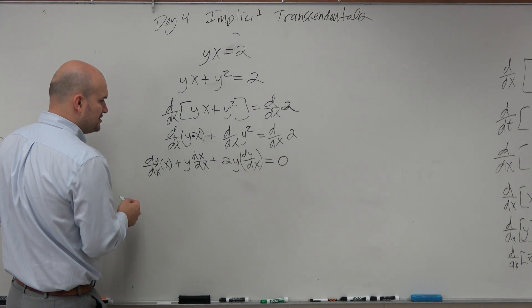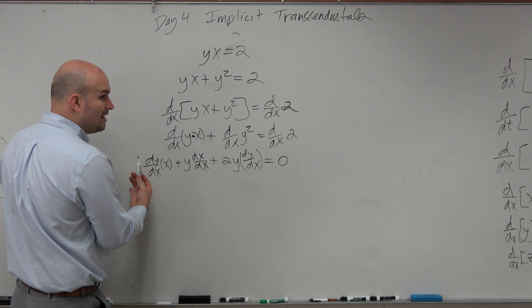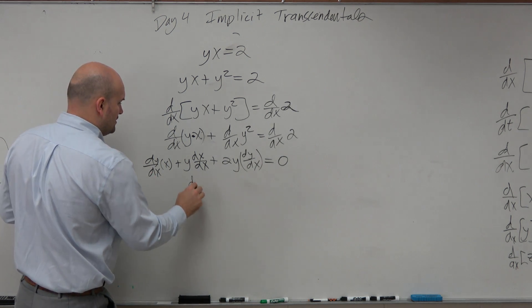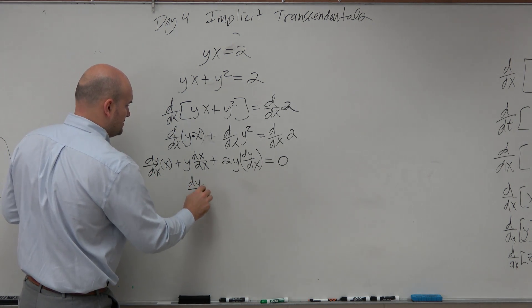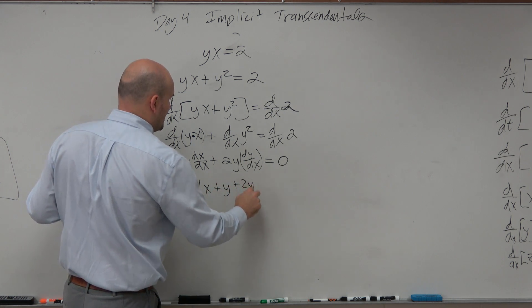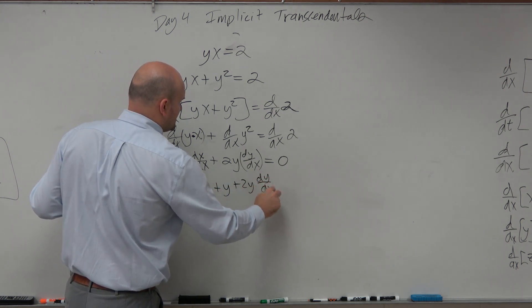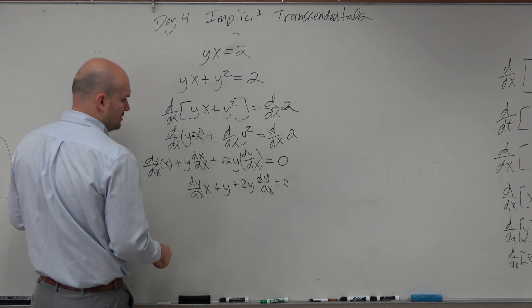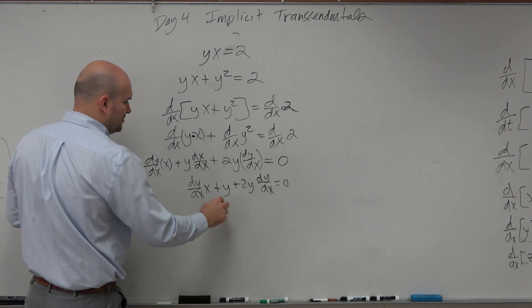All right, so what we want to do is get all the dy/dx's to the same side. So we have dy/dx times x plus y plus 2y dy/dx equals 0. All right, so I just simplified that a little bit.